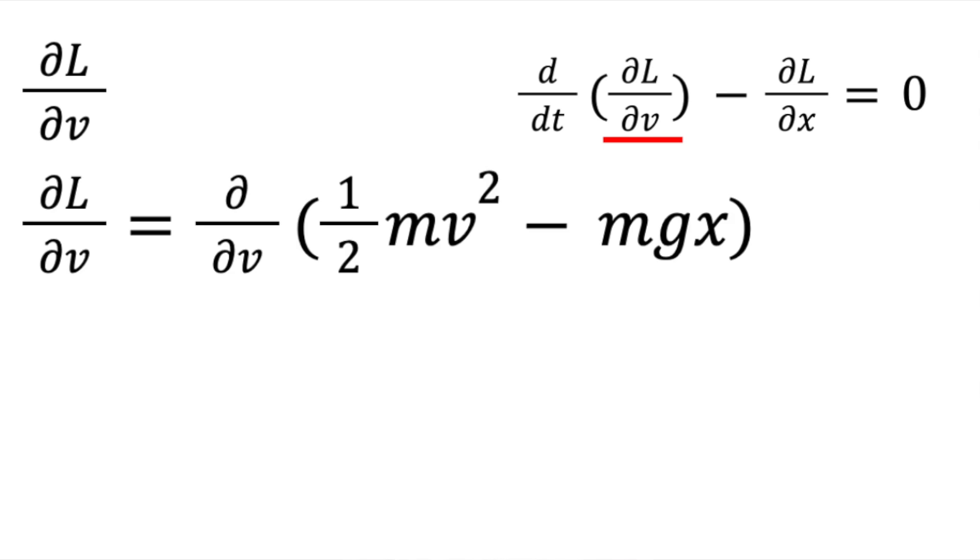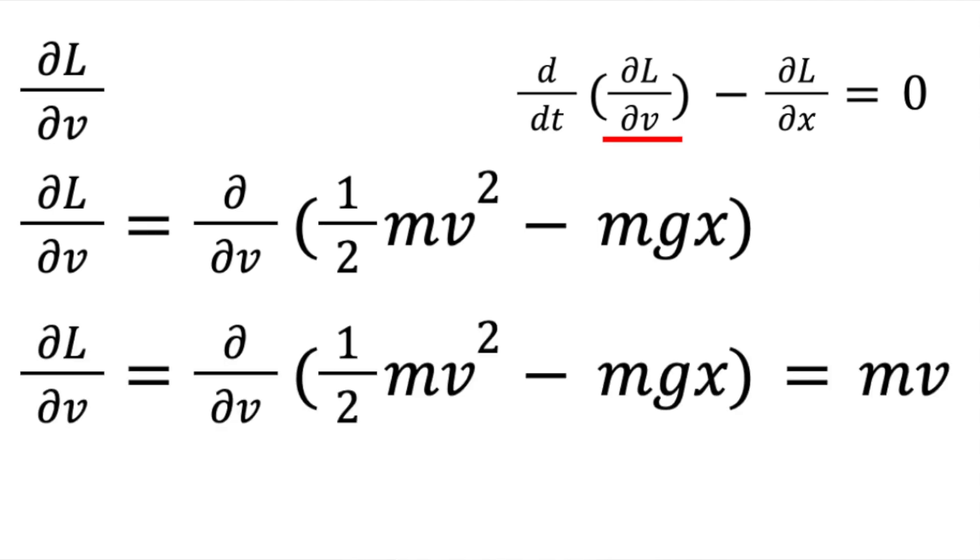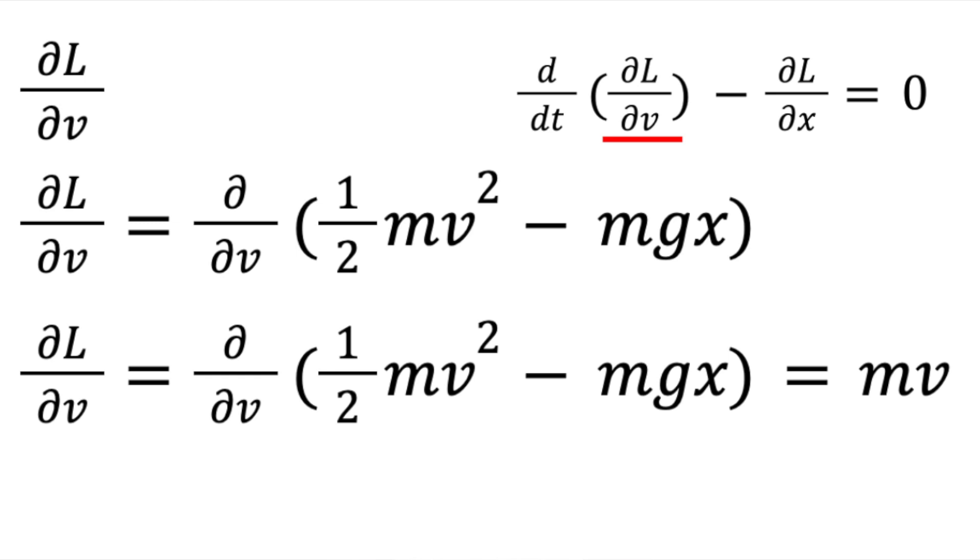So the partial derivative of this Lagrangian is equal to mv. If you remember, mv is the equation for momentum.